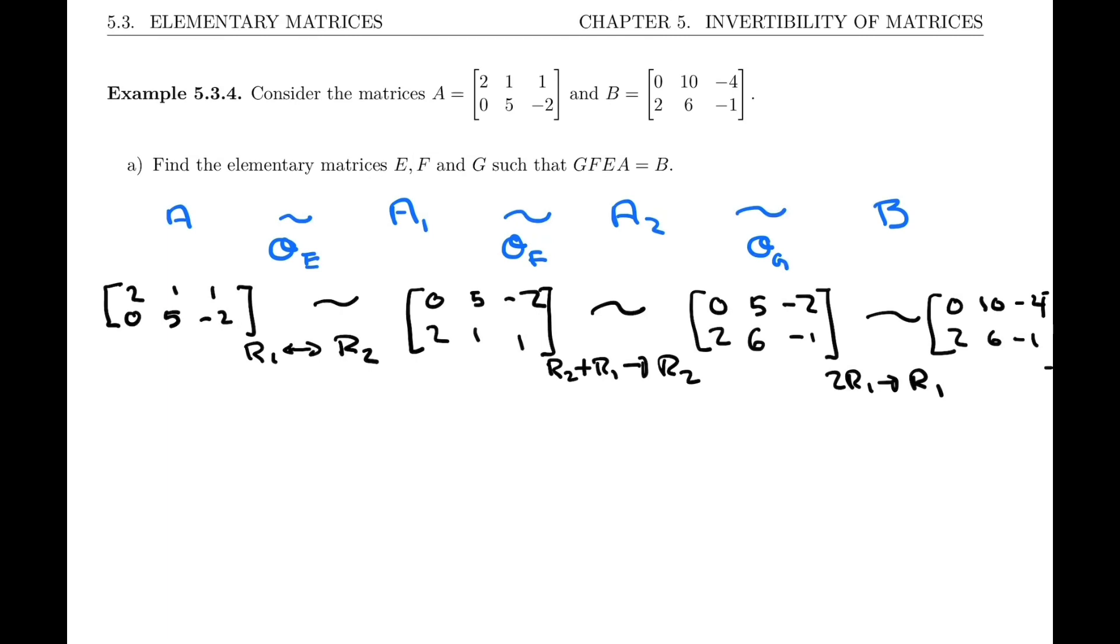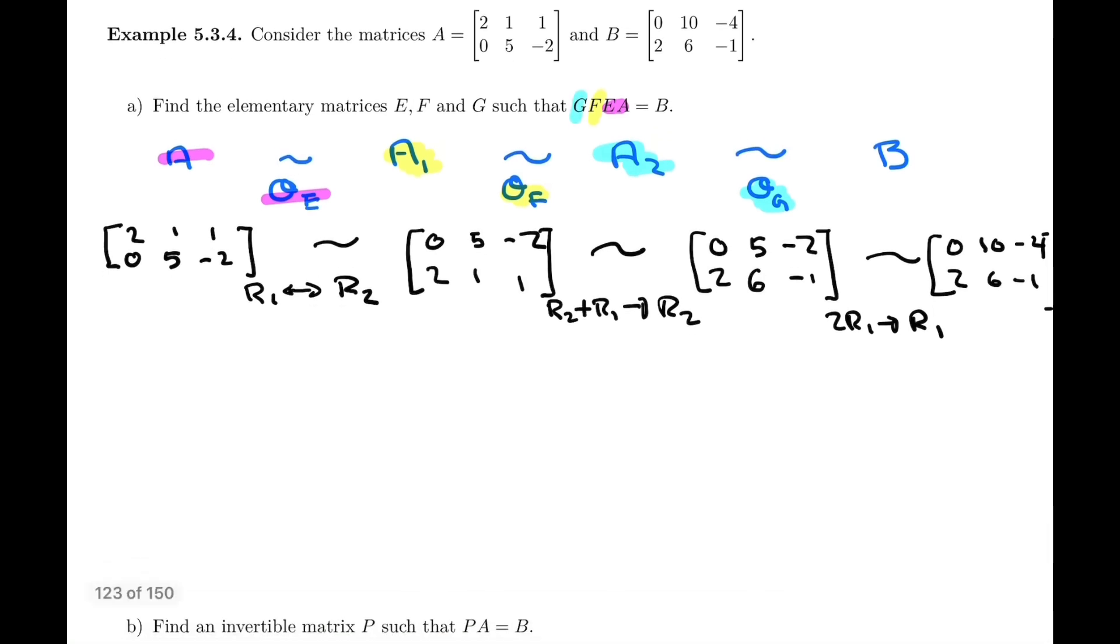And you notice that the order is reversed. We apply OE first, that gives us matrix A1. So applying OE to matrix A, that's like doing E times A, and that gives us the matrix A1. But when we apply OF to A1, we obtain the matrix A2. So that's like taking F and left multiplying by the new matrix A1, which is EA. And then finally, you can think of it as applying the operation OG to A2 in order to get B, and that's like left multiplying by G. So that's the logic behind this.